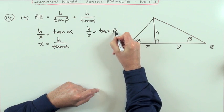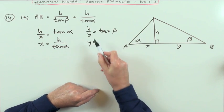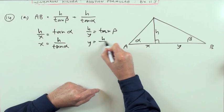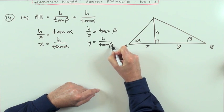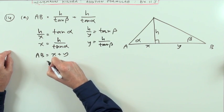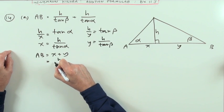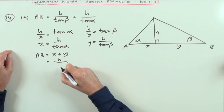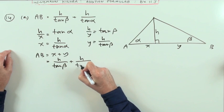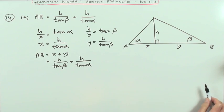Similarly in the other triangle, if h over y is the tangent of beta as it is, then to change the formula to y equals, y would have to go up so tan would come across and divide: h over tan beta. And then since AB is the sum of x and y, that means AB is equal to h over tan beta plus h over tan alpha.